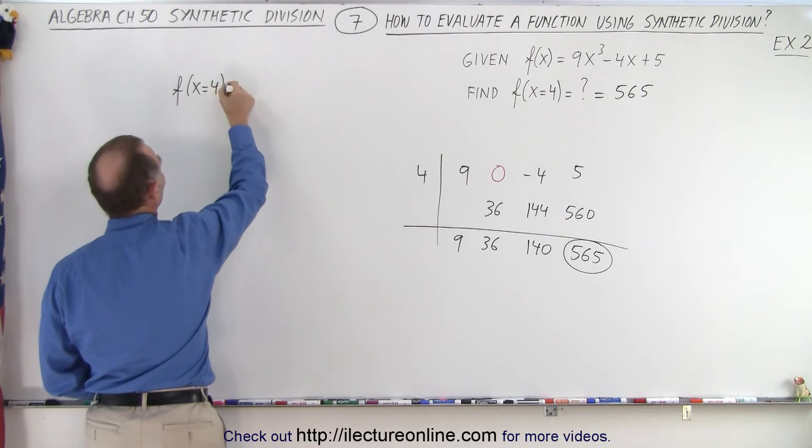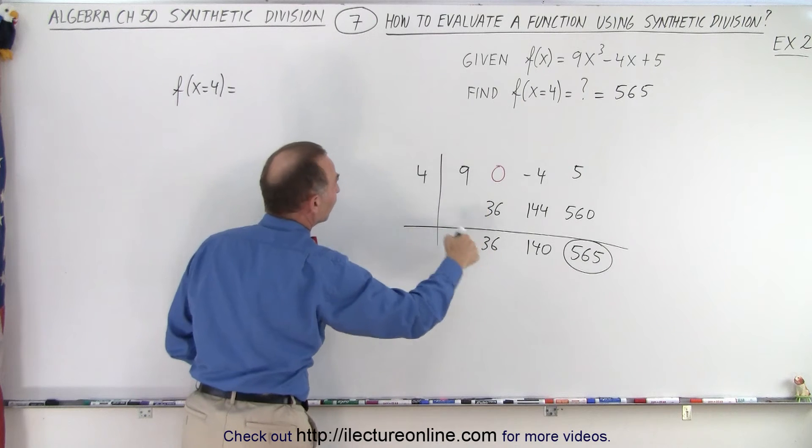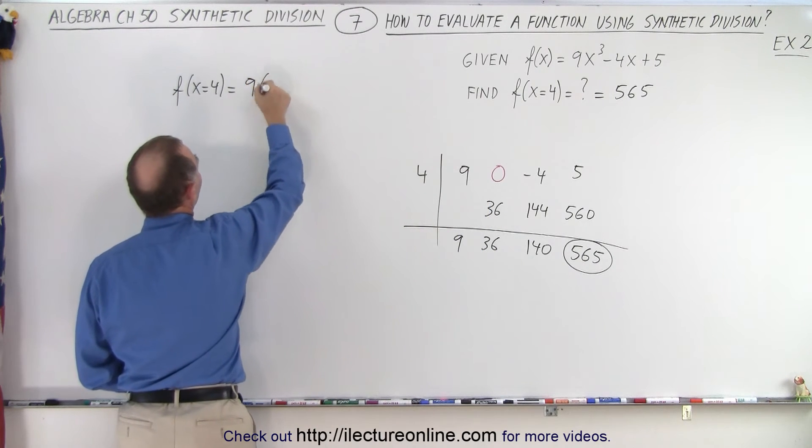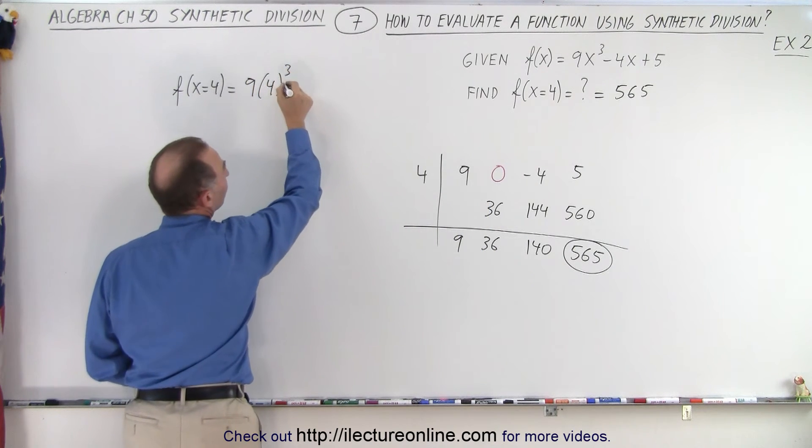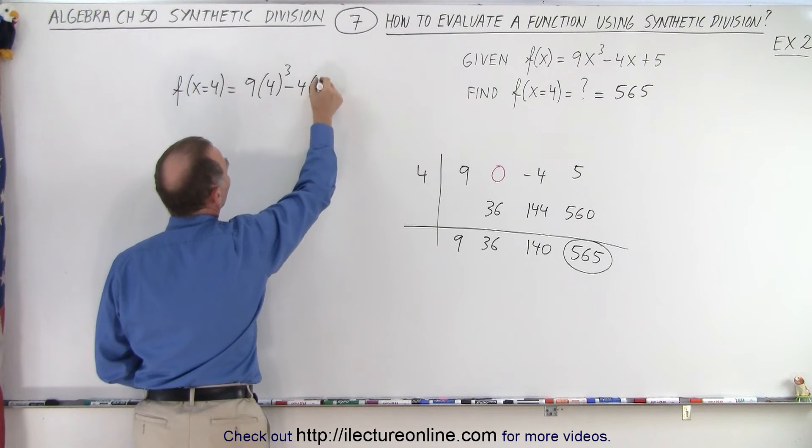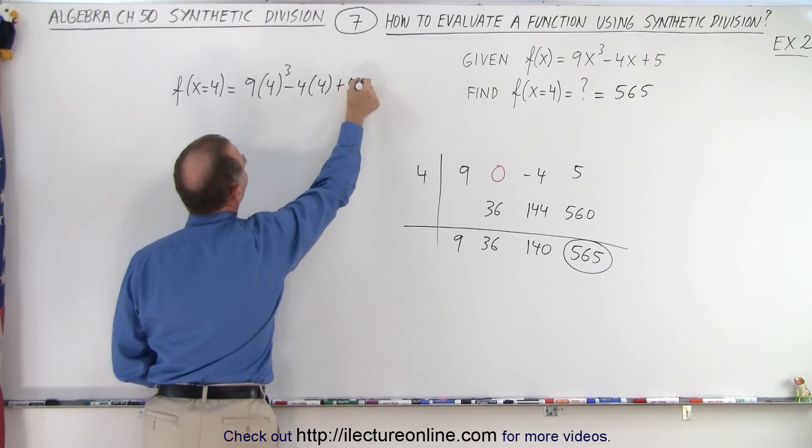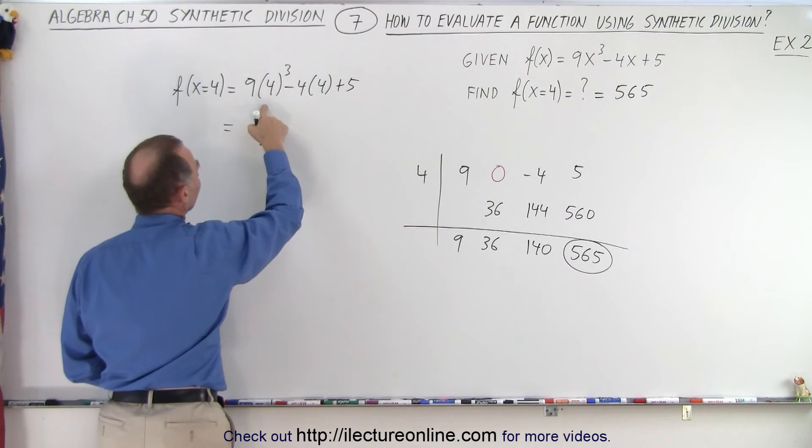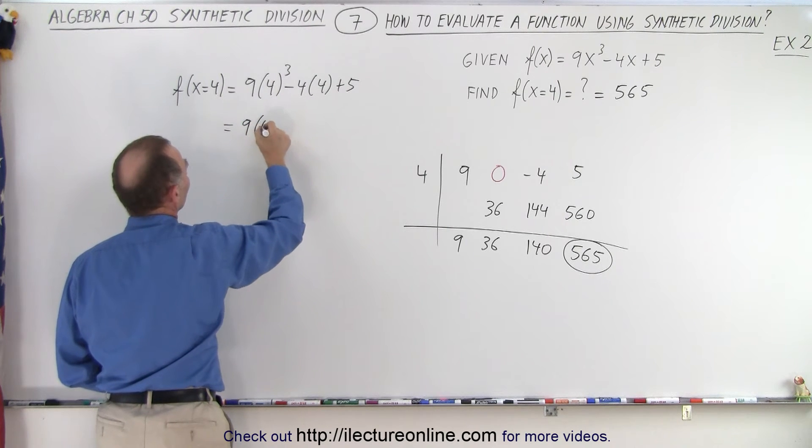Now let's check to make sure we did it correctly. So f when x is equal to 4 is equal to, we're going to replace every x by a 4, so we get 9 times 4 cubed minus 4 times 4 plus 5.